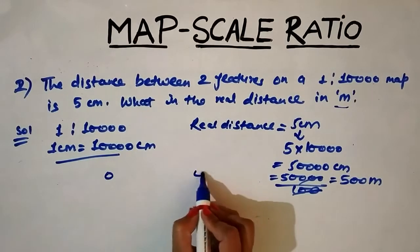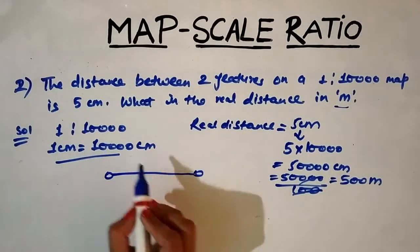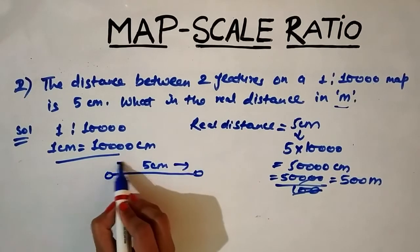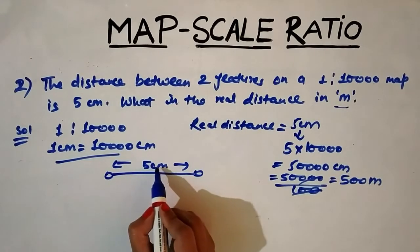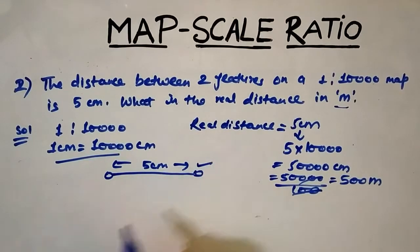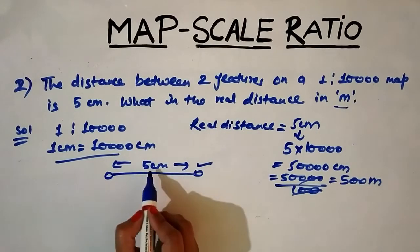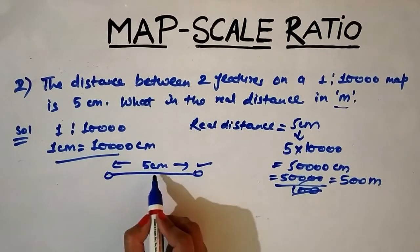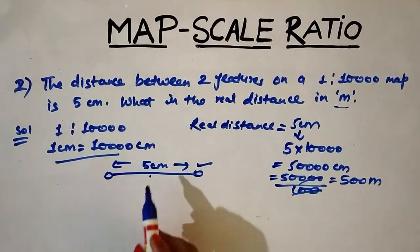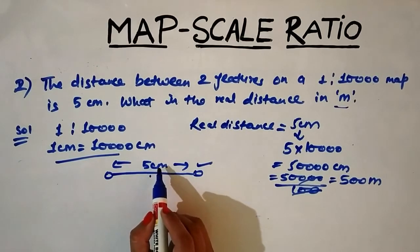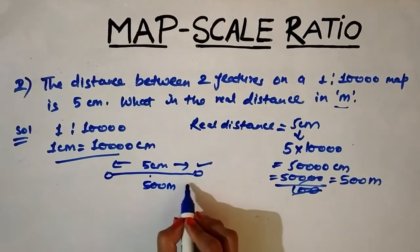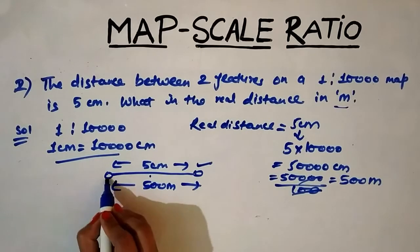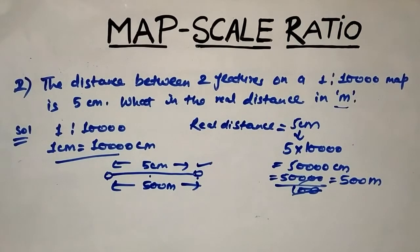So the real distance between the two features is 500 meters. The 5 centimeters is the distance represented on the map. To calculate this distance in reality, we convert using the given scale, and finally we get 500 meters as the real distance between these two features.